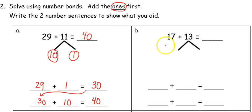And one more example. This time I'm adding 17 plus 13. I'll break the 13 into 10 and 3. I'll add my ones first. So 17 plus 3 equals 20.